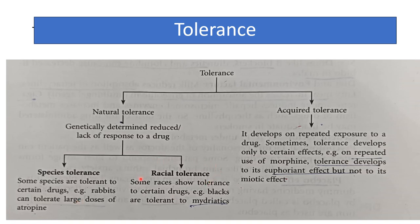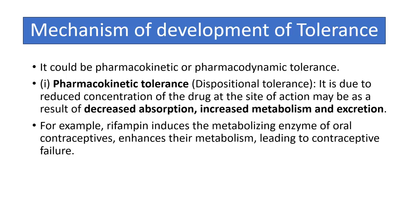Acquired tolerance: on repeated exposure to a drug, tolerance sometimes develops only to certain effects. For example, with repeated use of morphine, tolerance develops against the euphoric effect but not against the miotic effect.